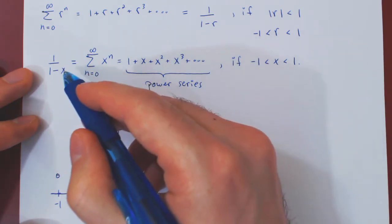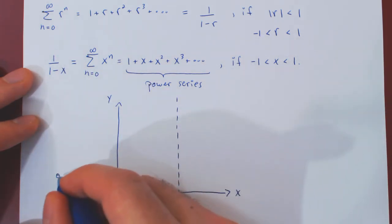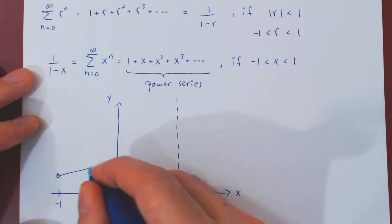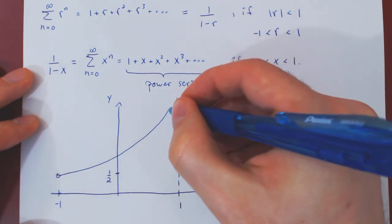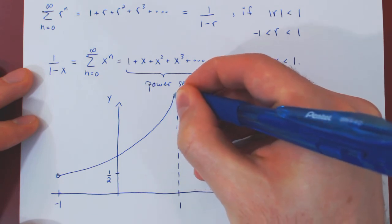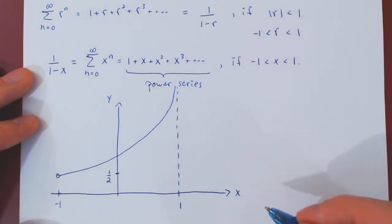The value when x is 0 is 1 over 1, which is 1. And, the graph will increase. And, again, as x approaches 1 from the left, the curve will blow up to positive infinity.